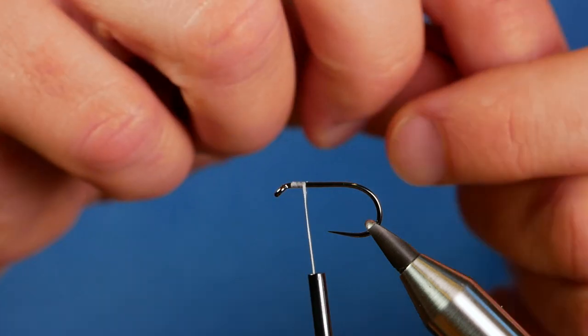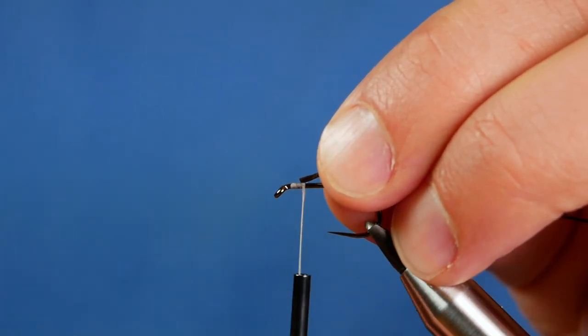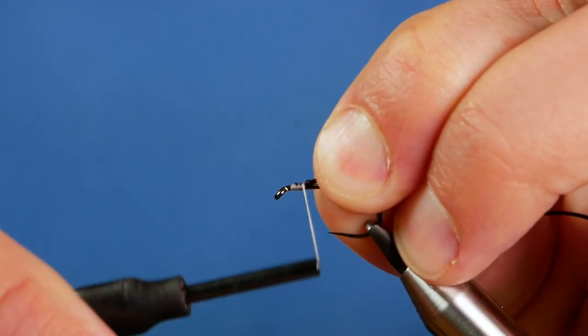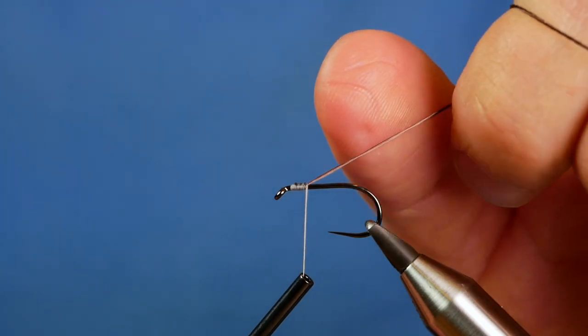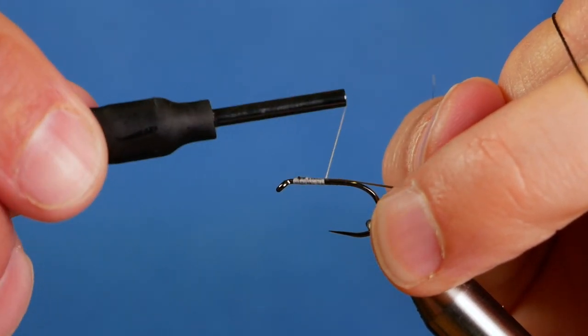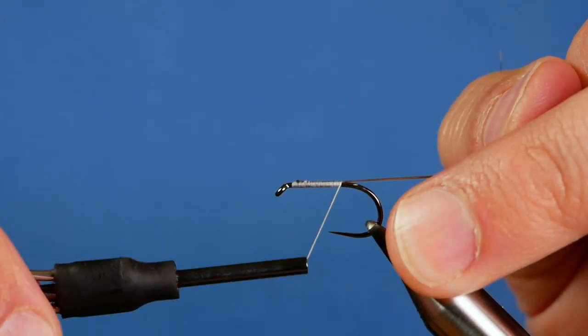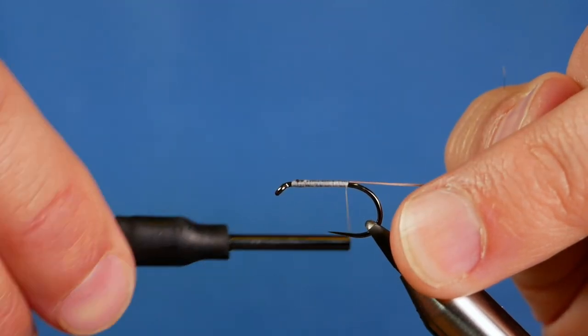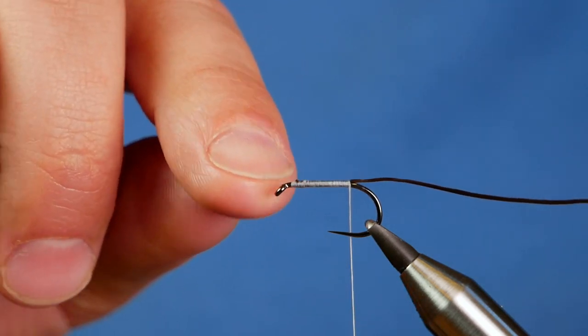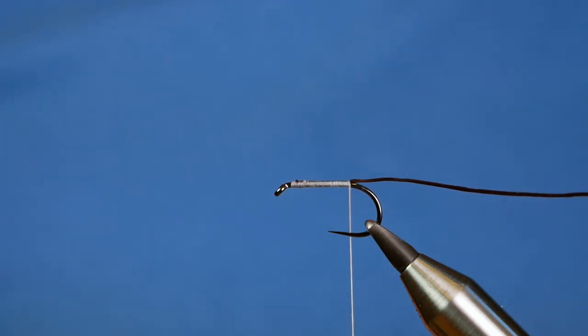So I've already taken a strand of the flexi-floss off and what I want to do is catch it in on that bank of thread there, just the tip, ever so gently. And then once it's in you can really get some pressure on it now and stretch it out so that you're keeping your body fairly thin, and I want nice touching turns all the way up the shank. Now if you watch a lot of my videos you'll know that I'm not one for keeping it neat with touching turns, but on this fly it is quite important that you do try and keep it as neat as possible.